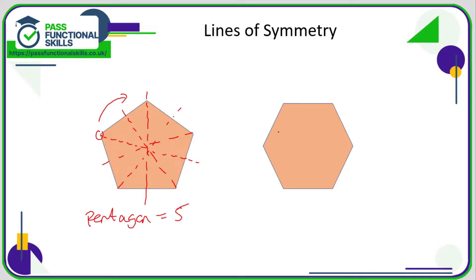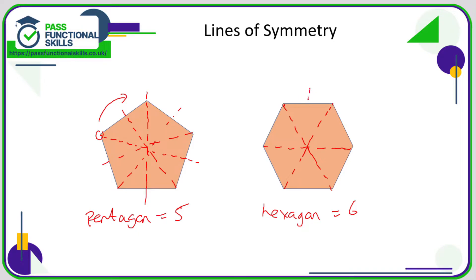This is a regular hexagon, and since it has six sides it will have six lines of symmetry. It has one from corner to corner here, one from corner to corner here, and one from corner to corner here. It also has lines of symmetry right through the middle of each pair of opposite sides. So we can see that a hexagon has six lines of symmetry.